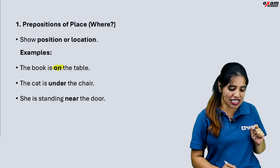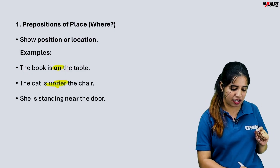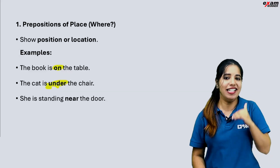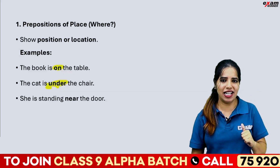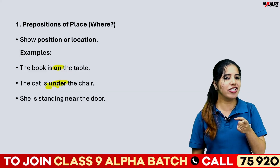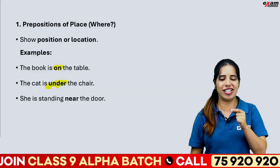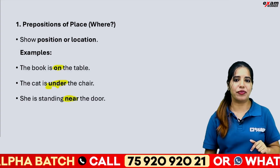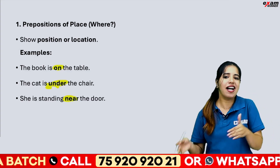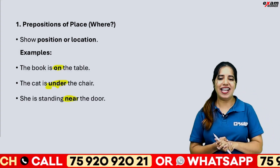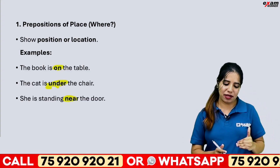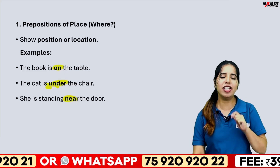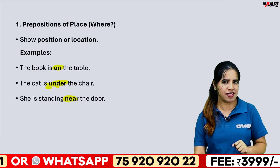The cat is under the chair. It means a location or a position. She is standing near the door — it means a near preposition. These are prepositions of place.